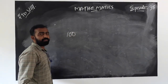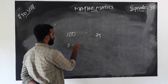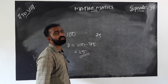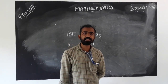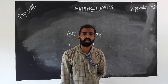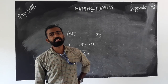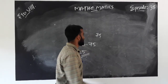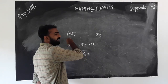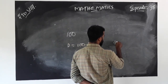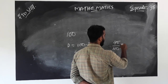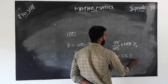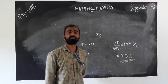For example, if market price is 100 and selling price is 75, then discount equals 100 minus 75, we get 25. Discount is 25. And discount percentage equals discount divided by market price into 100%. That is 25 by 100 into 100, we get 25 percentage discount.